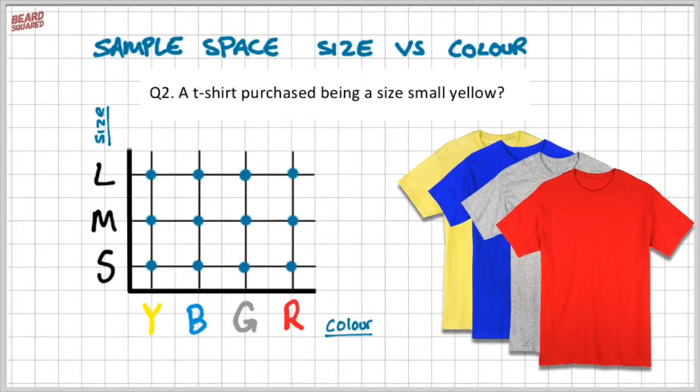And I'm looking for the probability that a t-shirt purchase being a size small yellow. So I want a size small yellow, which is this point here. And that is basically one out of 12. So I have a 1/12 chance of purchasing a small yellow t-shirt.